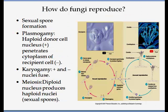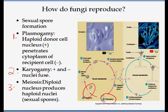Another way fungi reproduce is by sexual means. In sexual fungal reproduction, spores result through three phases. The first phase is plasmogamy, in which a haploid nucleus of a donor cell penetrates the cytoplasm of a recipient cell. This is followed by karyogamy, where positive and negative strains fuse to give rise to a diploid nucleus. In the third stage the diploid nucleus produces haploid nuclei or sexual spores.